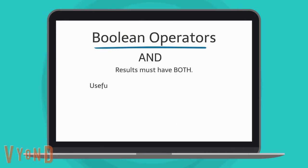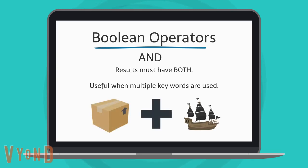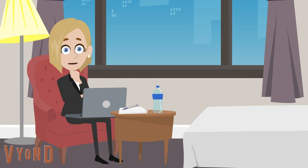The use of AND will narrow your search and is extremely helpful when searching for information where all your main keywords are used, such as both the words ship and boat are found. You do have to be careful with AND because you could overly narrow your search.